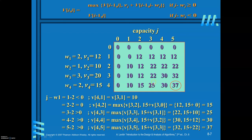For v[4][3]: go to previous row (22), then 15 plus go 2 columns back (value 10), so maximum of 22 and 25 is 25, recorded here. For v[4][4]: previous row value is 30, then 15 plus 2 columns back (12) equals 27. Maximum of 30 and 27 is 30, so 30 is written. For v[4][5]: previous row value is 32, then 15 plus 2 columns back (22) equals 37, which is the maximum value.